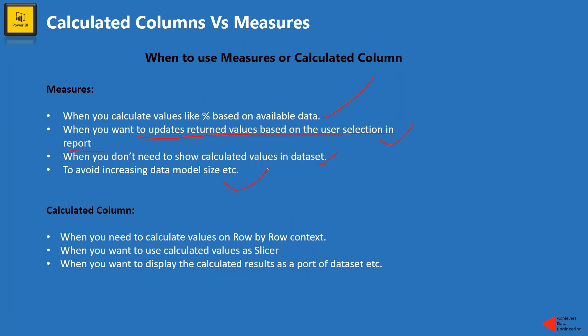Now, still, there are situations where you should go for calculated columns. So for example, if there is a situation where you want to calculate values on row by row context, in that situation, you have no other option other than going for a calculated column. Also, just for an example, suppose you have a couple of product unit price available and number of items sold in that particular order. And if you want to calculate the